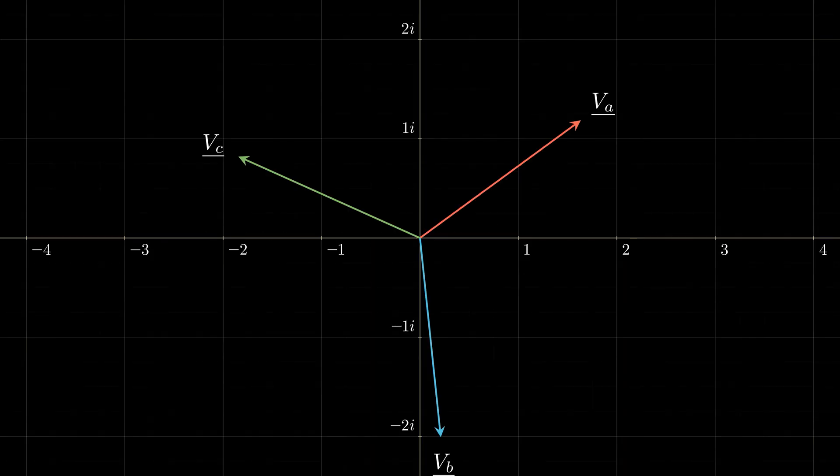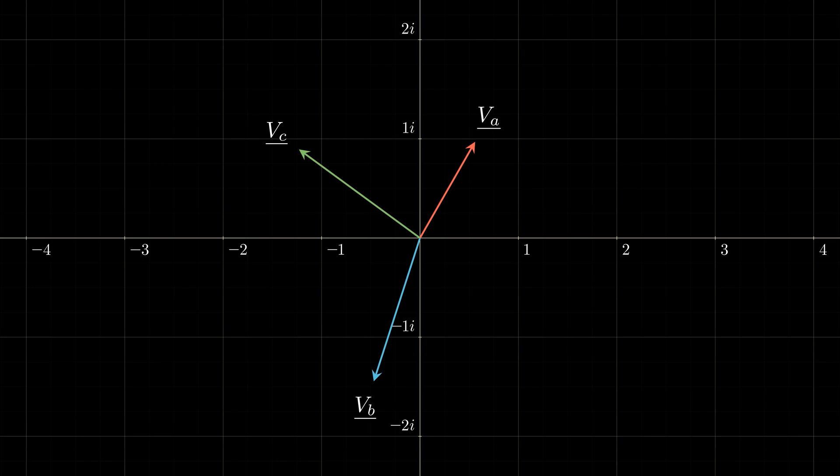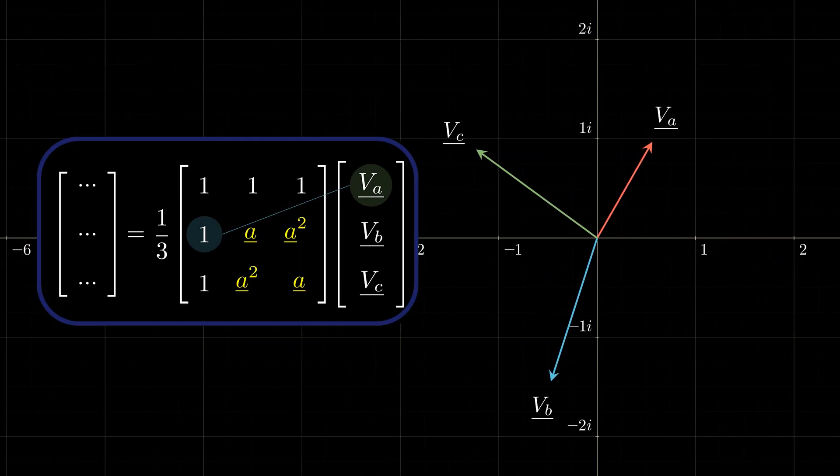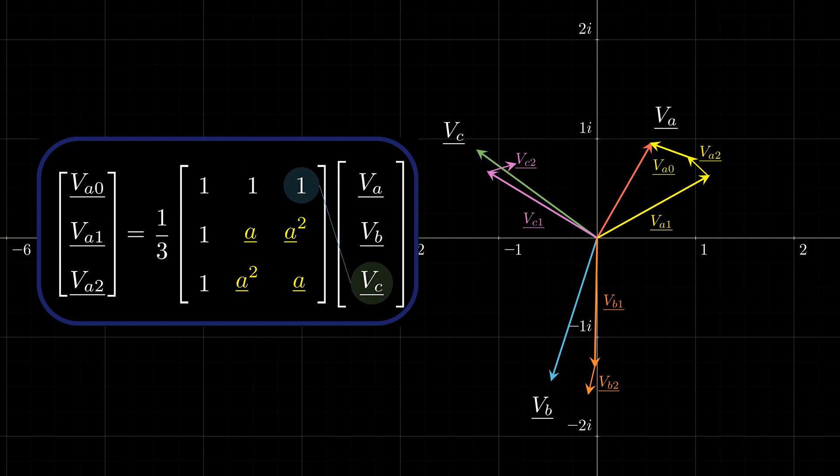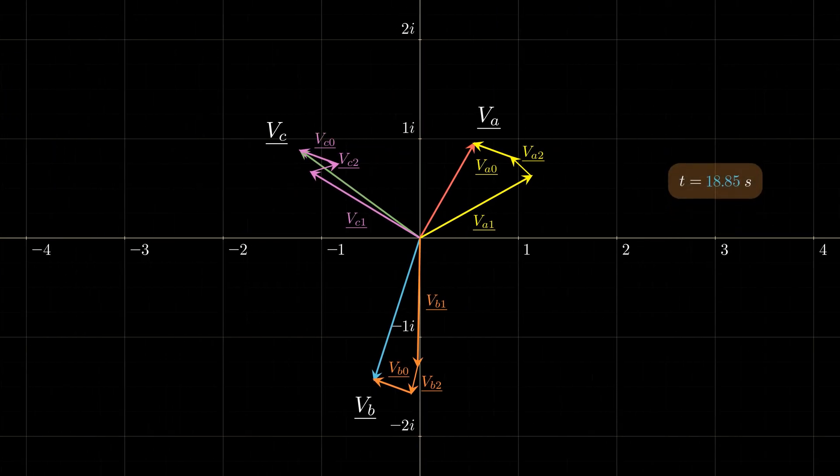Let's apply the inverse Fortescue transformation to a random unbalanced system. From a simple matrix multiplication, we obtain the positive sequence, the negative sequence, which we place head to tail with the positive one, and finally the zero sequence to achieve equality with the original vectors. We need to keep in mind that all the vectors here are rotating at the same frequency.